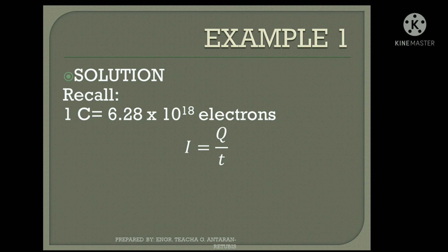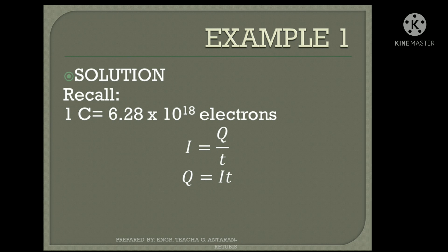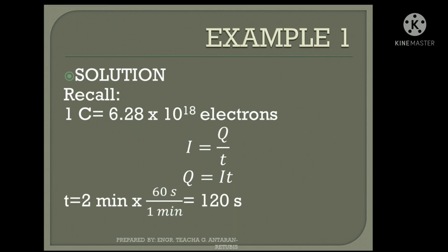Since what is required is the number of electrons, we can solve for it by first finding the charge. Rearranging the formula, charge is equal to current times time. Note that current should be in amperes and time should be in seconds. Our given time is in minutes, so we need to convert: 2 minutes times 60 seconds per minute equals 120 seconds.